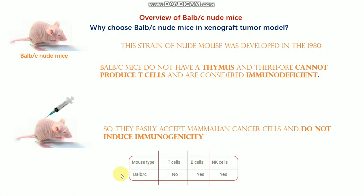The BALB/c nude mouse has no T cells because there is no thymus, but it does have B cells because B cells originate and mature in the bone marrow. However, without T cell function, B cells do not work properly. These mice also have natural killer cells.